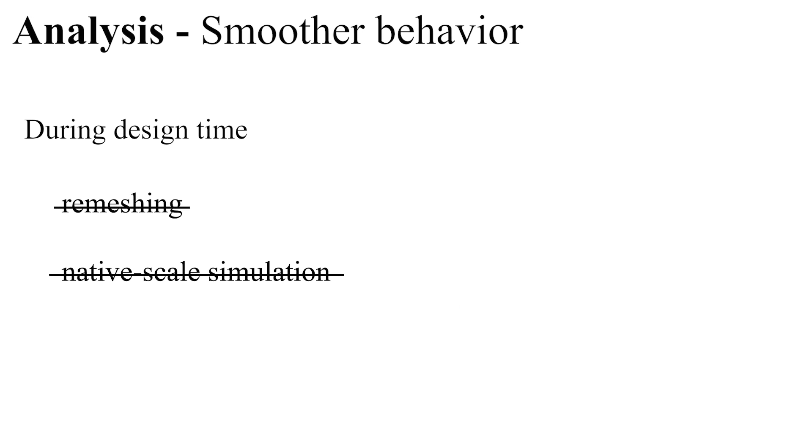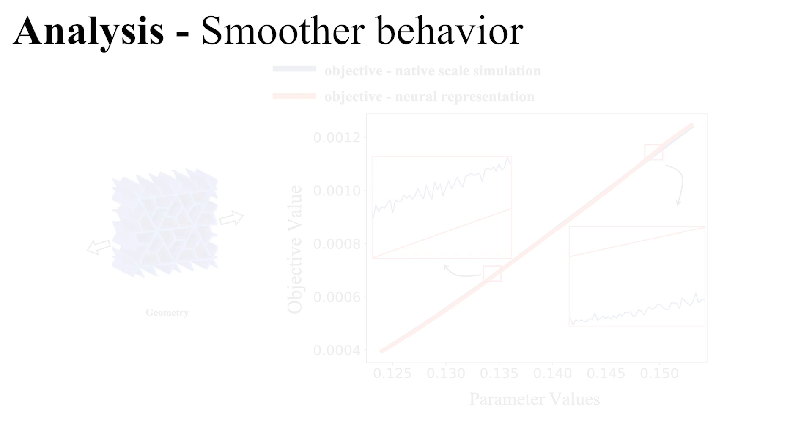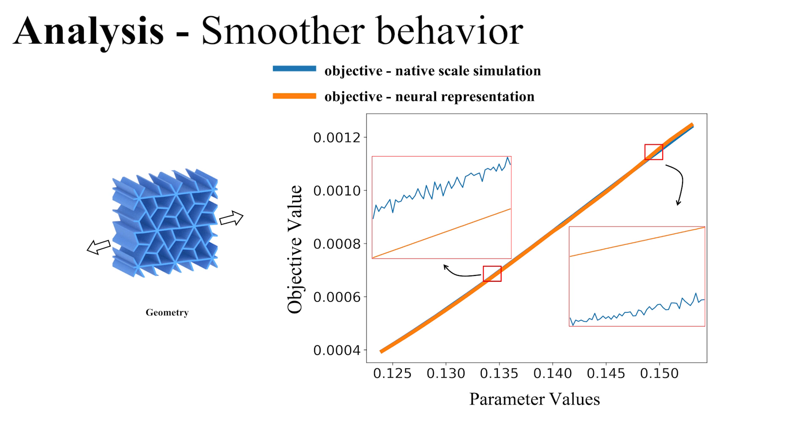Our method removes the need for native scale simulation and re-meshing at design time, providing smoother behavior of macro-mechanical properties across parameter space compared to simulation-based methods with meshing in the loop. Here we examine this smooth behavior on a concrete example of matching a set of target points along a strain-stress curve for uniaxial loading for the example shown on the left.